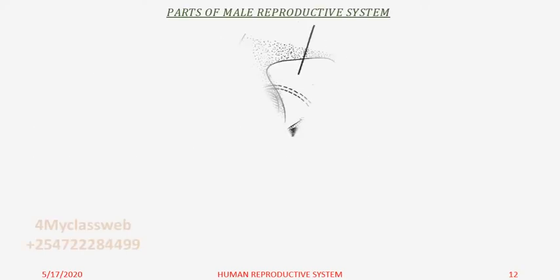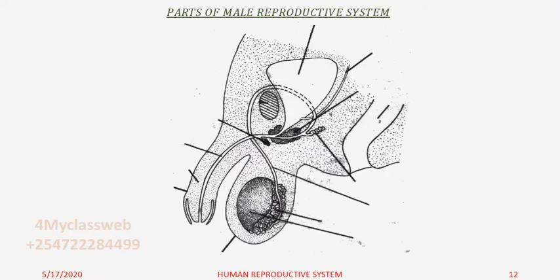We shall begin by identifying the parts of the male reproductive system. I'm going to use my teaching aid here to help the learners identify each of these parts. I will begin with two parts which protrude outside the body. Below here we have the scrotum. The scrotum encases this part here that we call the testes. Testes are two.